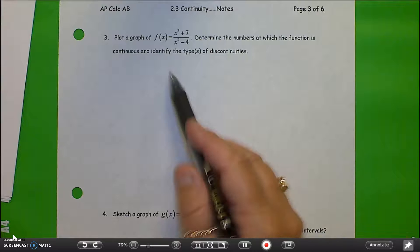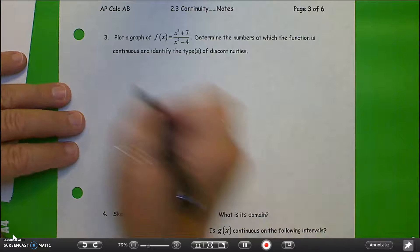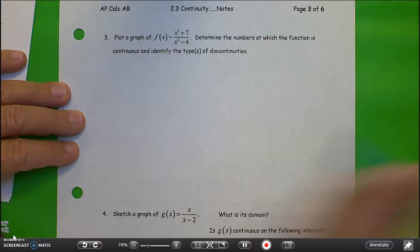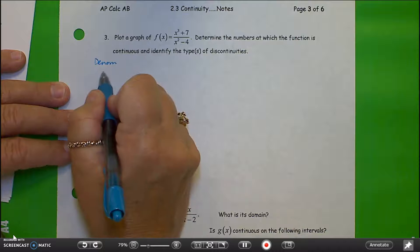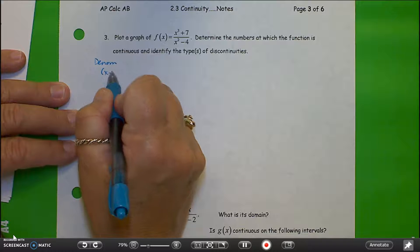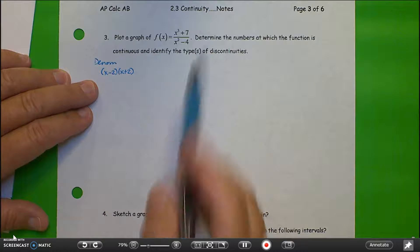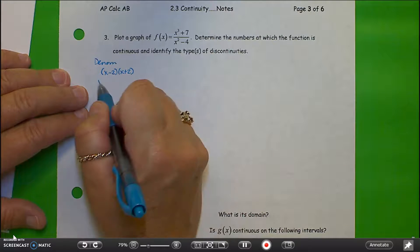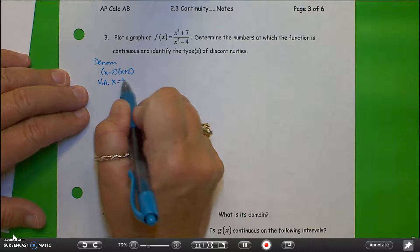When we start this, I can look at the denominator and see there's going to be some issues. If I factor the denominator, the denominator factors to x minus 2 and x plus 2. There's no factoring in the numerator that's going to help us out here. So we basically have vertical asymptotes at plus or minus 2.